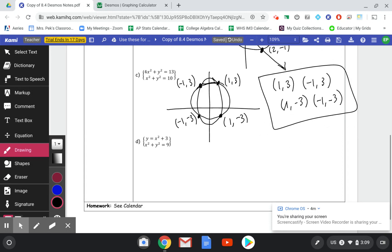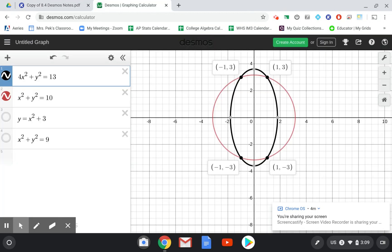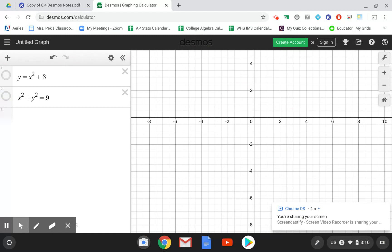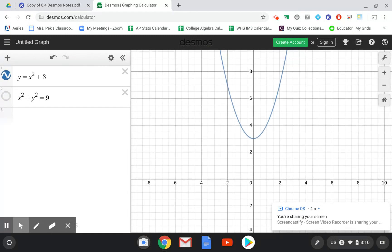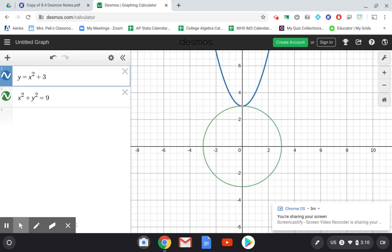All right, last one. We have a parabola and a circle. So type them into Desmos or your graphing calculator if that's what you're using. There is y equals x squared plus 3. We have x squared plus y squared equals 9. This one's a little different because we actually only have one solution because the parabola ends up just touching the circle instead of going straight through it.